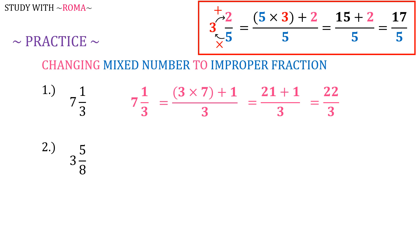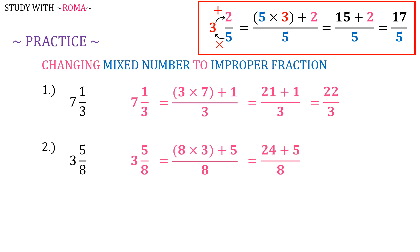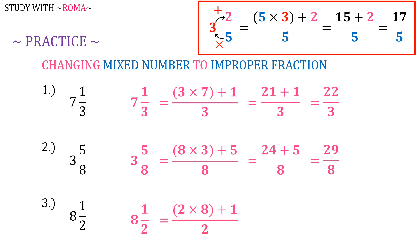Number 2: 3 and 5 over 8. Remember our guide? So 3 and 5 over 8 is equal to 8 times 3 plus 5, all over 8, equals 24 plus 5 all over 8, which is equal to 29 over 8. Number 3: 8 and 1 half is equal to 2 times 8 plus 1, all over 2, equals 16 plus 1 all over 2, which is equal to 17 over 2.